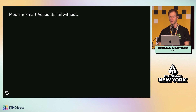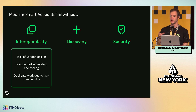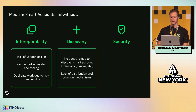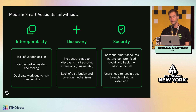Modular smart accounts will fail without three things: interoperability, discovery, and security. Interoperability because there is a risk of vendor locking, with different teams working on different tools and creating a fragmented ecosystem, also duplicating work on tools that are not compatible. Regarding discovery, there's currently no place to find these smart account extensions. There's a lack of distribution and it's difficult for users to see what the market has ready for them. Regarding security, we still need to make sure that the funds of users are secure and there are no risks.